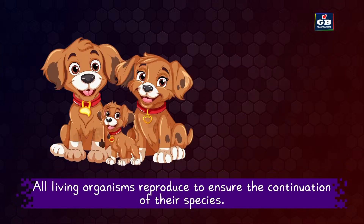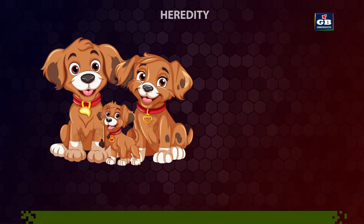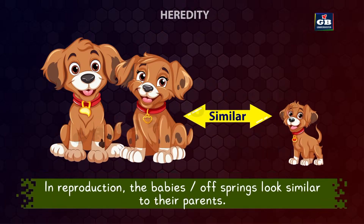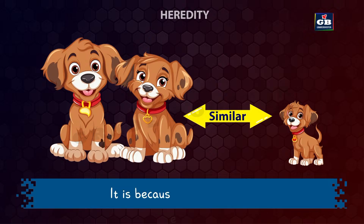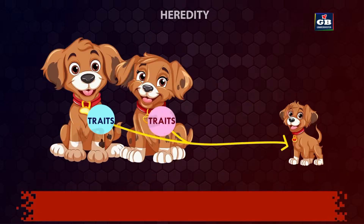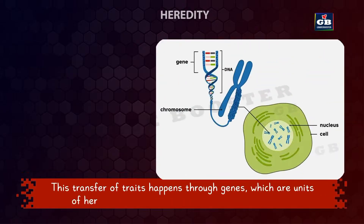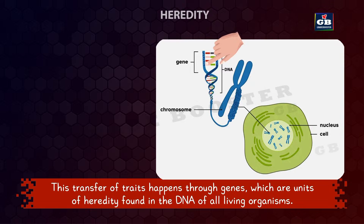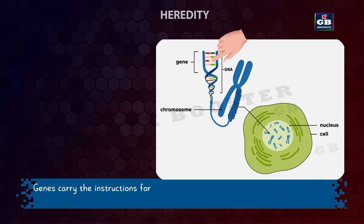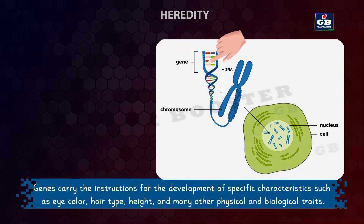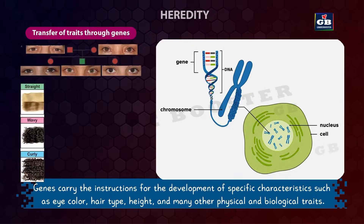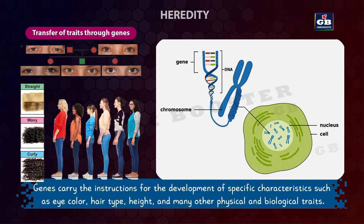All living organisms reproduce to ensure the continuation of their species. In reproduction, the babies or offsprings look similar to their parents. Do you know why? It is because of inheritance. Inheritance or heredity is the process by which traits are passed from parents to offsprings. This transfer of traits happens through genes, which are the units of heredity found in the DNA of all living organisms. Genes carry the instructions for the development of specific characteristics such as eye color, hair type, height and many other physical and biological traits.